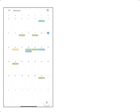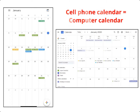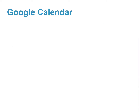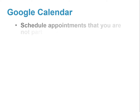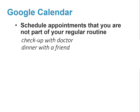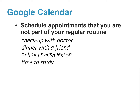So if I schedule an appointment on my phone, it will also appear on my computer calendar. Google Calendar is very useful for scheduling appointments that are not part of your regular routine, such as a checkup with your doctor, dinner with a friend, your online English lesson, and time to study.